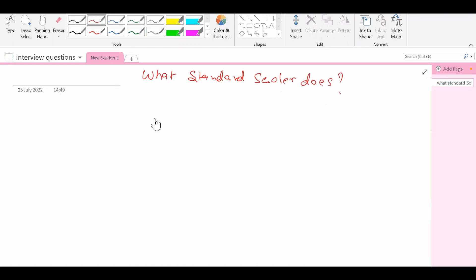So what exactly standard scalar does? Let's say I have a dataset, and there's one column and another column, and let's say this is my target. These two first and second are my predictors. Let x1 be let's say temperature and x2 be some distance. Distance is let's say 1500, 2000, 2600, and temperature is 32, 36, 31, 32.